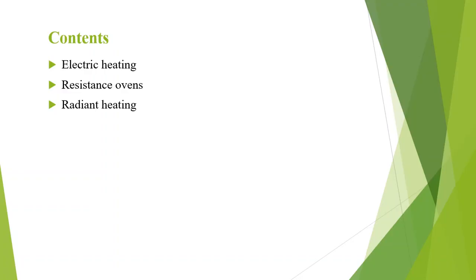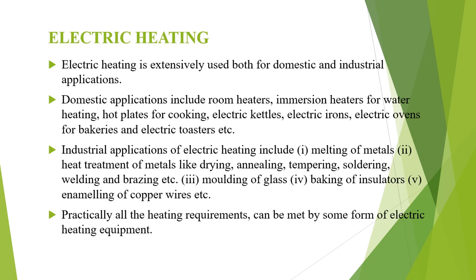In this video the following contents are covered: electric heating, resistance ovens and radiant heating. Electric heating — in a number of cases where heating is required, the use of electrically produced heat is nowadays an economical proposition on account of the present low cost and availability of electrical energy. Electrical heating is extensively used both for domestic and industrial applications. Domestic applications include room heaters, immersion heaters for water heating, hot plates for cooking.